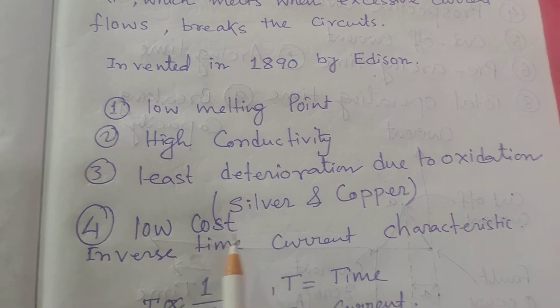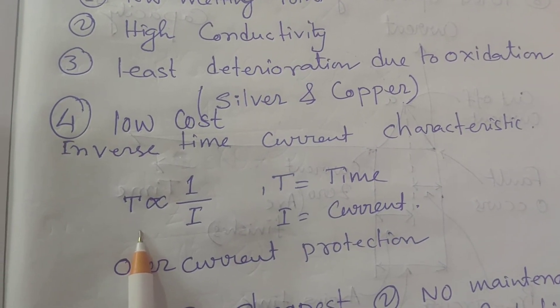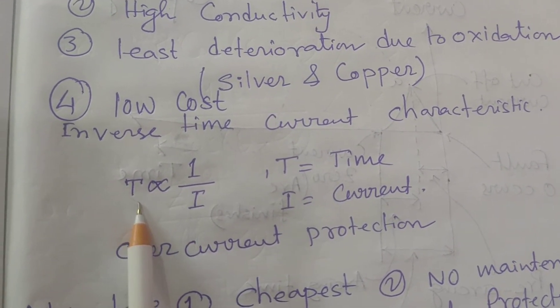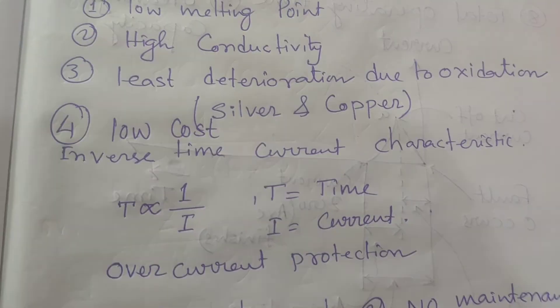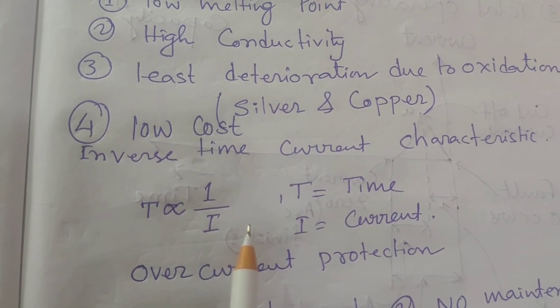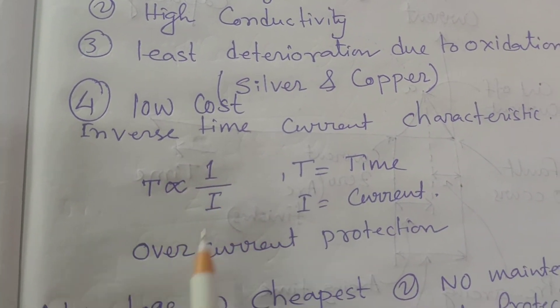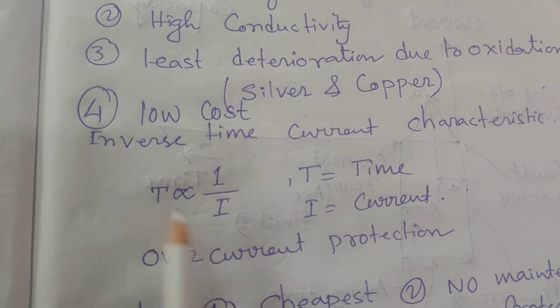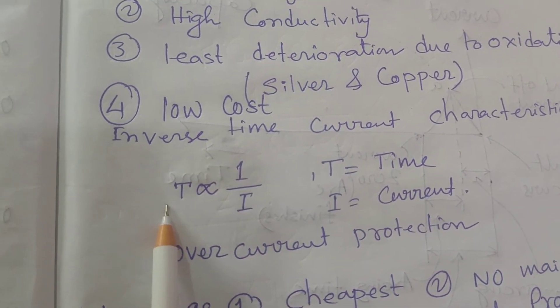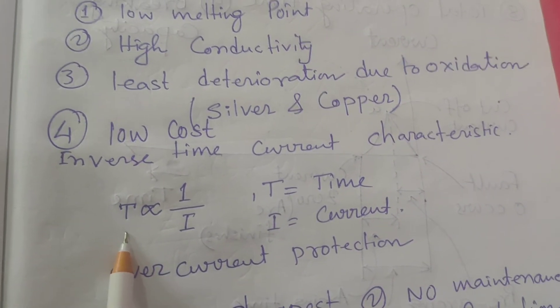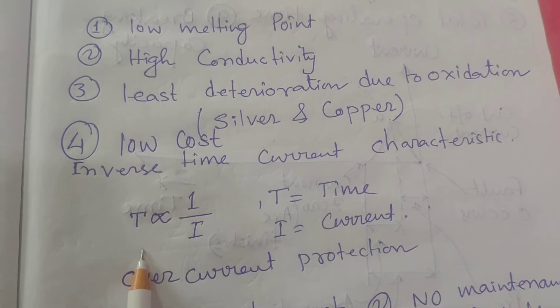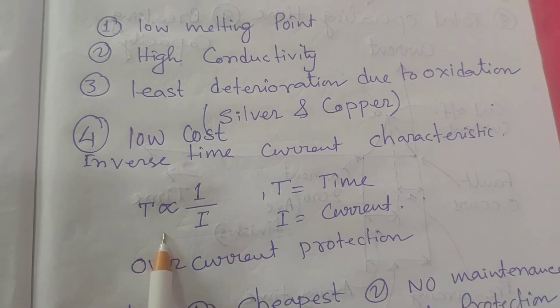It has an inverse time-current characteristic. What does it mean? That is t proportional to 1 by i, where t is the time and i is the current. So the current is inversely proportional to t, and obviously t is also proportional to the current. If the current is increasing, the time will be decreasing as they are inversely proportional with each other. In the case of high current flow, the time of melting or time of blowing and time of breaking of the circuit is too low. So it is a very important protection for our homes, factories, industries, and all places.